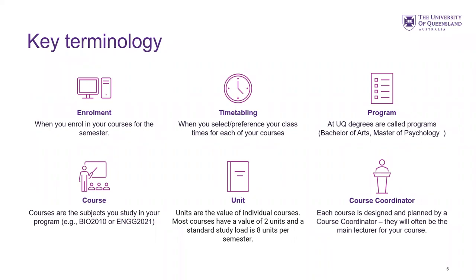In your program, you will have different courses. Courses are the subjects that you study in your program — you might know these as subjects at different institutions. Each course has a unit value. Most courses are two units and the standard study load is eight units per semester. If you have a placement or an honours course, it might be a higher unit value, but most will be two units. Each course is designed and planned by a course coordinator, who will often be the main lecturer of your course as well.